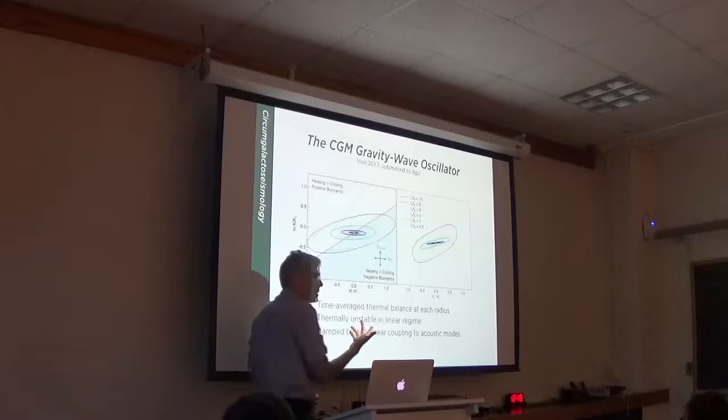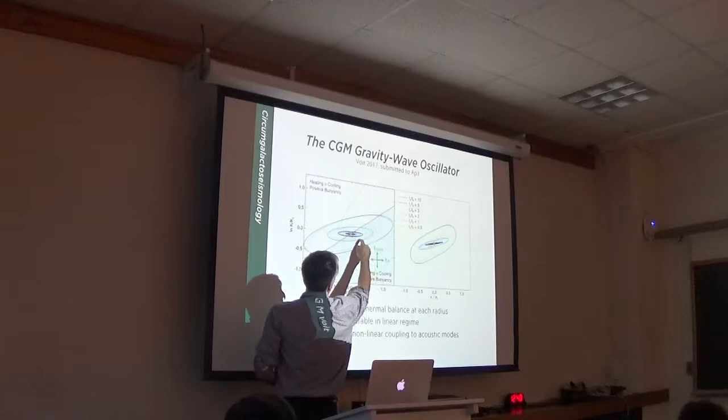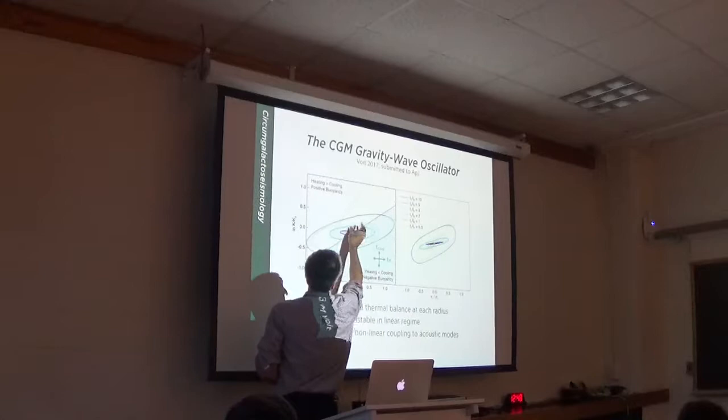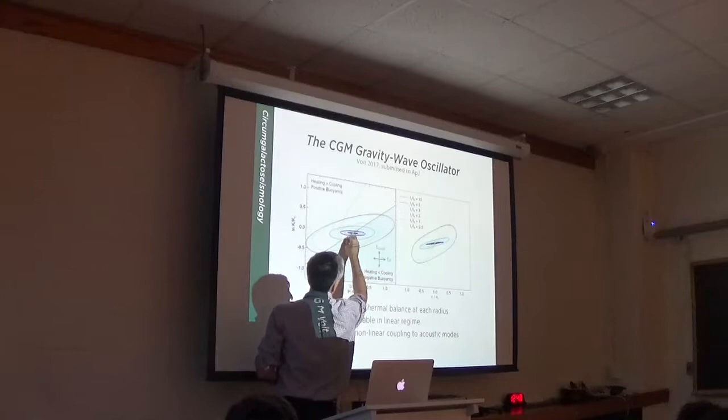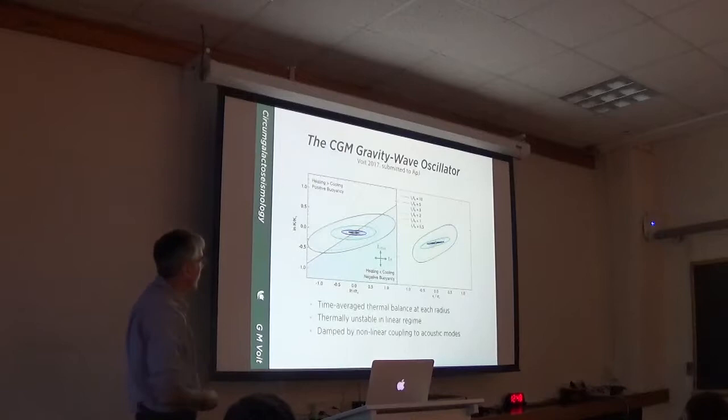So it will tend to go down in entropy. But also, it will be negatively buoyant and it will tend to sink. And so the time scale in which it moves this direction is related to cooling time, and the time scale in which it moves this direction is related to freefall time. And these different colors are tracks for different ratios of cooling time to freefall time. And it has been known since 1970 that these waves are thermally unstable.